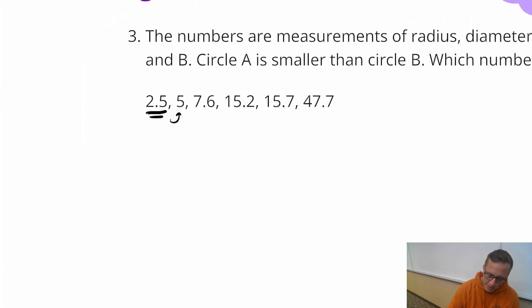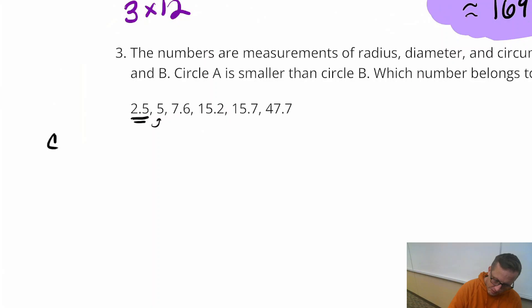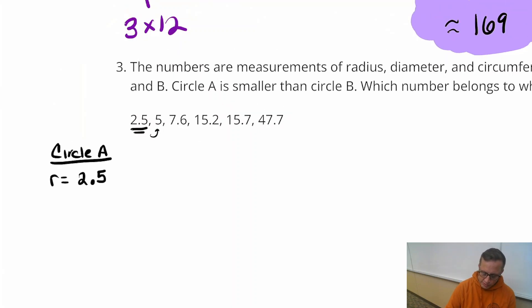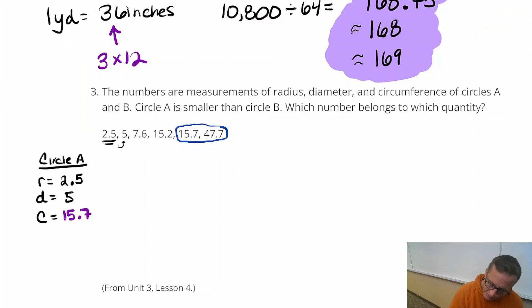So circle A, r for radius is 2.5. Circle A's d for diameter is 5. And then c for circumference, is it 7.6? No, it's not that. It's probably one of these numbers. Now, since it said circle A is smaller, I'm betting it's 15.7. We can test that out, but I'm pretty sure it's 15.7. So that's circle A.